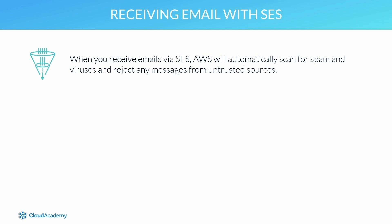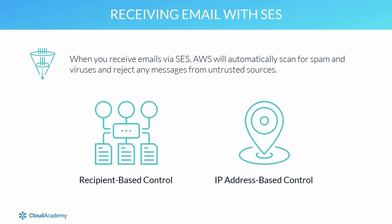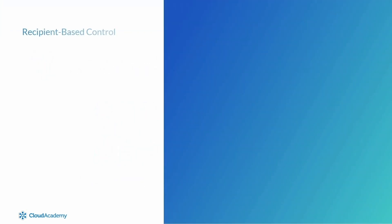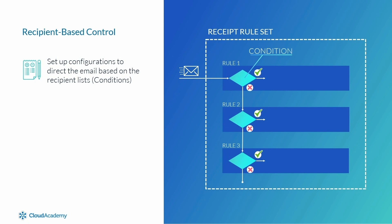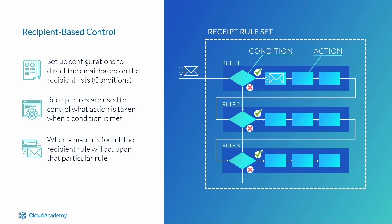When receiving email, there are two ways to configure SES: recipient-based control and IP address-based control. With recipient-based control, you set up configurations to direct email based on the recipient. These recipient lists are classed as conditions. Receipt rules control what action is taken when a condition is met — when the recipient of the email matches a recipient in the condition list. If no match is found, the email is deleted.